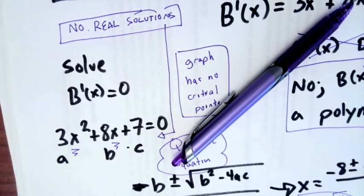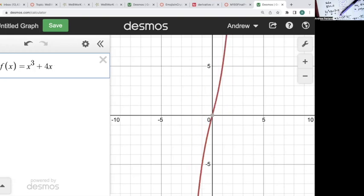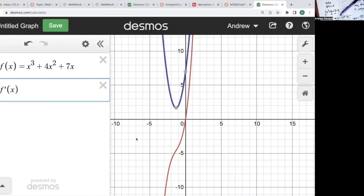And we can confirm that by graphing it. So when I go to graph it, I'm going to have f of x is equal to x cubed plus 4x squared plus 7x. I look at it, I don't see anywhere that the slope actually goes flat.